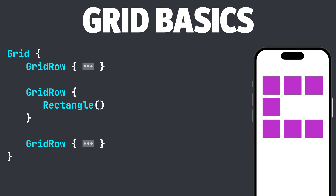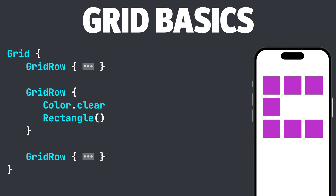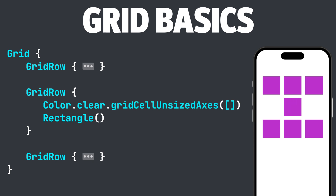First, inside of the second grid row, we need to add a color and make it clear. Next, we add the .gridCellUnsizedAxes modifier to Color.clear. And as you can see, our rectangle now moves over to the next column. Applying the .gridCellUnsizedAxes modifier to the color view ensures that the empty cell matches the default height and width of the occupied cells.